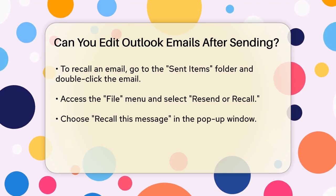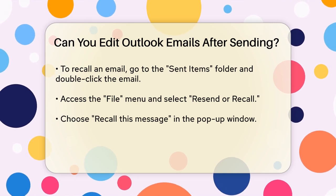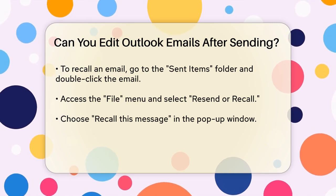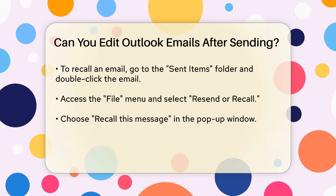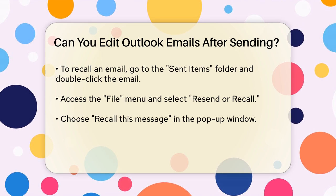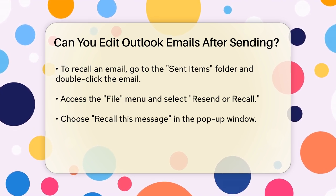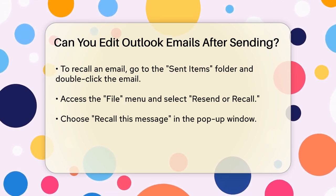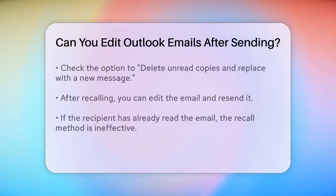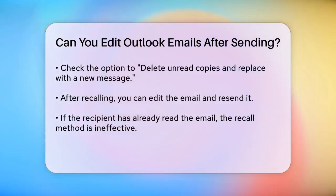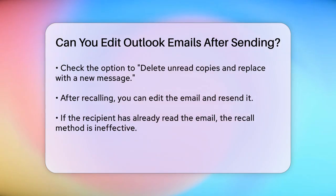Here's how you can try to recall and edit an email. Go to the Sent Items folder, double-click the email you want to edit, and then go to the File menu. From there, select the Resend or Recall option and choose Recall this message. In the pop-up window, check the box that says Delete Unread Copies and Replace with a new message.